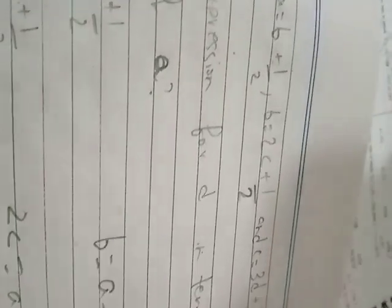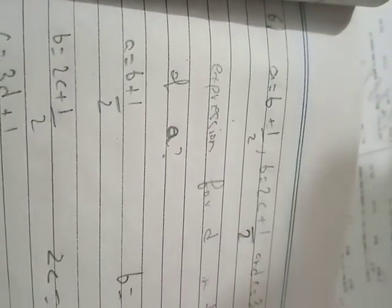A is equal to B plus, B is equal to 2C plus, and then C is 3D plus. Now, what are we doing? Expression for D in terms of A. Look, we need A and D.